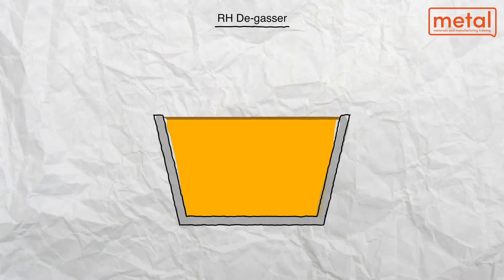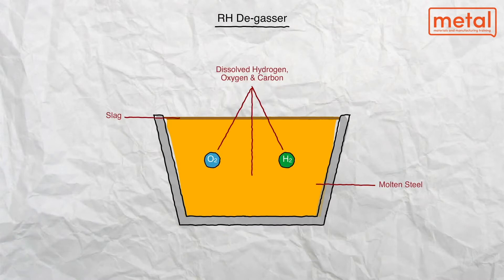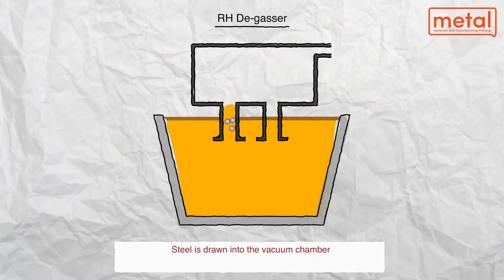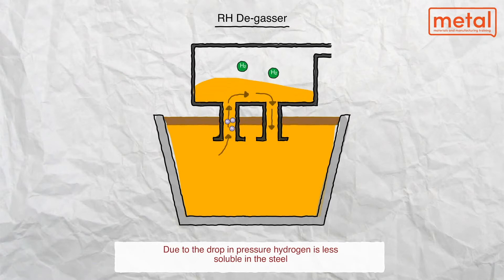Liquid steel from basic oxygen steelmaking can contain oxygen, hydrogen, and carbon. To further refine the steel and remove dissolved oxygen, hydrogen, and reduce carbon content, the RH process is achieved by the following steps.